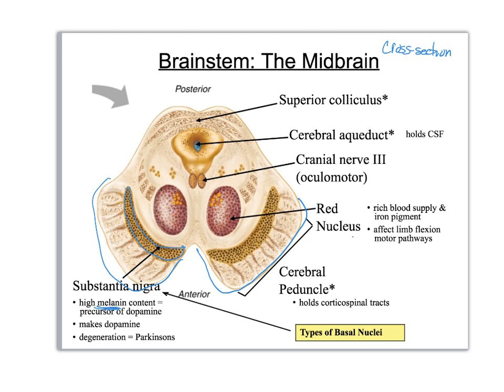Melanin in this case is a precursor of dopamine, so you get a ton of dopamine being made in the substantia nigra of the cerebral peduncle. Also in these areas you have the corticospinal tracts, which we'll briefly mention when we get to the spinal cord. Another structure — you've got these things that look like big eyes — that's the red nucleus.